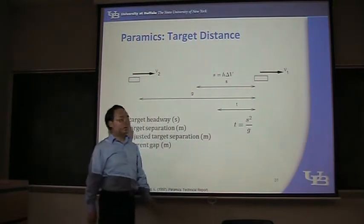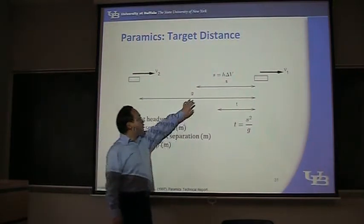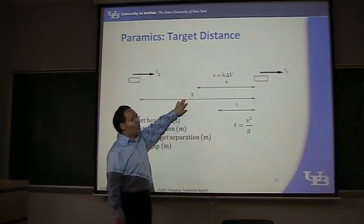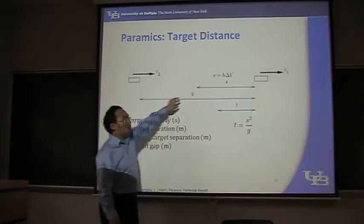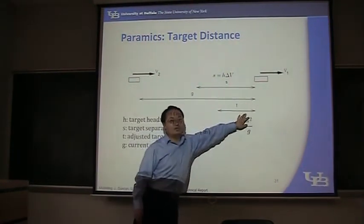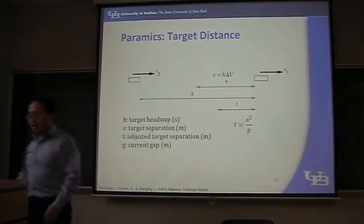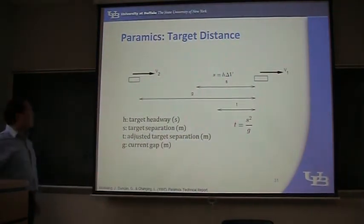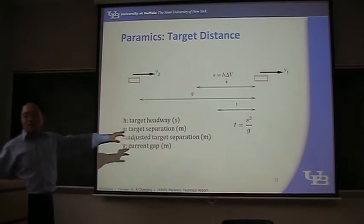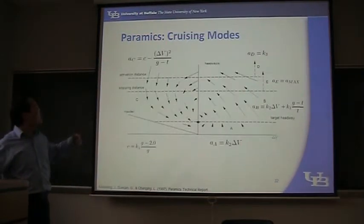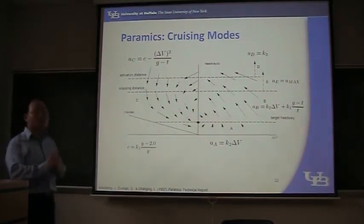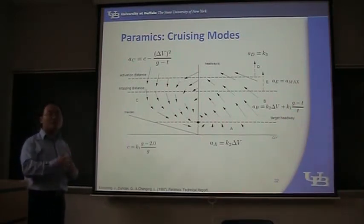S multiplied by S over G: when G gets bigger, S is constant, G gets bigger, T gets smaller. That's called the adjusted target separation, T. With this T, the parameter is going to calculate the cruising acceleration based on several modes.